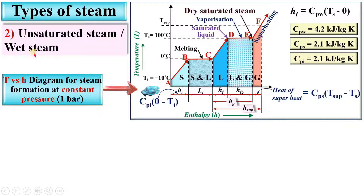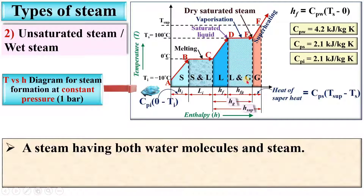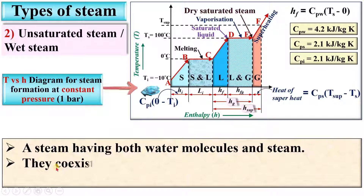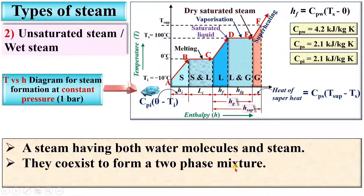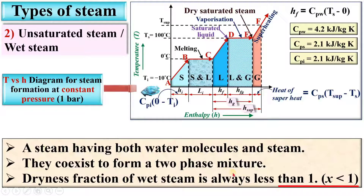The next type is unsaturated steam, also known as wet steam. It is a steam having both water molecules and steam — a mixture of liquid as well as gaseous phase. In this figure, from point D to E there is a mixture of liquid and gas, so from D to E there is wet steam. They co-exist to form a two-phase mixture. The dryness fraction of wet steam is always less than 1 because it contains some water molecules.